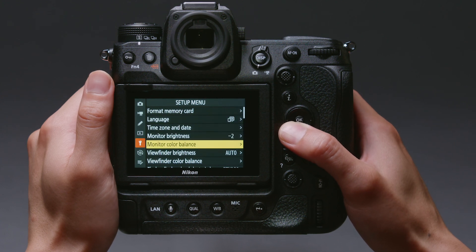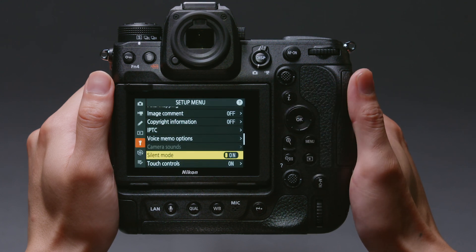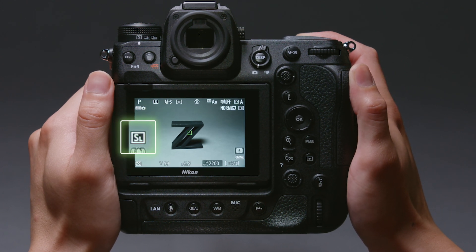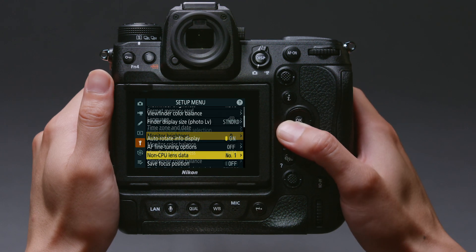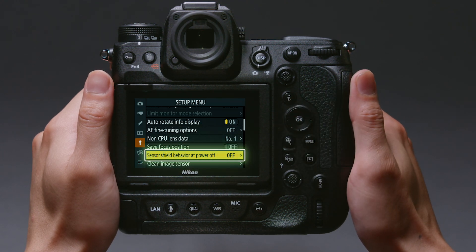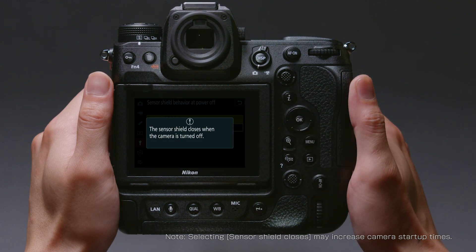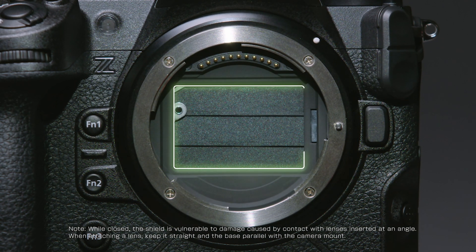Selecting On for Silent Mode in the setup menu disables the shutter release sound and beep speaker, and also limits other camera sounds. If Sensor Shield Closes is selected for Sensor Shield Behavior at Power Off in the setup menu, the shield in front of the image sensor will close when the camera is turned off. This prevents dust or other foreign matter collecting on the image sensor when lenses are exchanged.